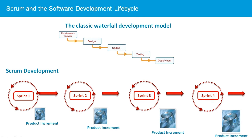As each sprint builds on the current product increment, the product increment grows in functionality with each completed sprint. At the end of each sprint, the customer sees a demonstration of the current product increment and gives feedback, allowing the team to quickly respond to changing requirements and ensuring the final product matches the customer's expectations.